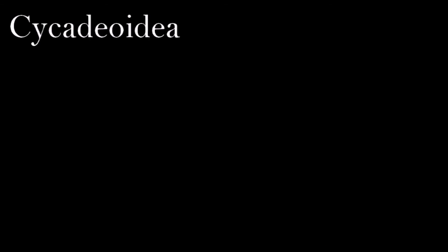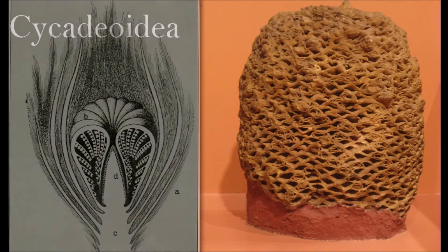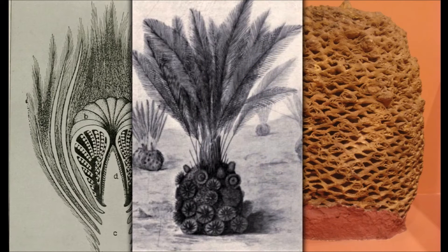These large, fossilized Bennettitalian trunks are known from many places in North America and Europe. Most Cycadeoidea stems are short and barrel-shaped, with a dense covering of leaf bases. In life, they had a crown of pinnate leaves at the top of the stem. They were seed plants, but were unlike any other group in having their reproductive organs arranged in complex flower-like structures protected by stout, spirally arranged bracts.